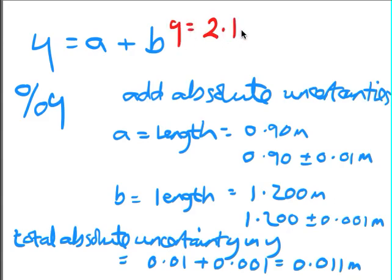so you would say Y equals 2.1 plus or minus 0.011 metres. And that would be the total uncertainty.